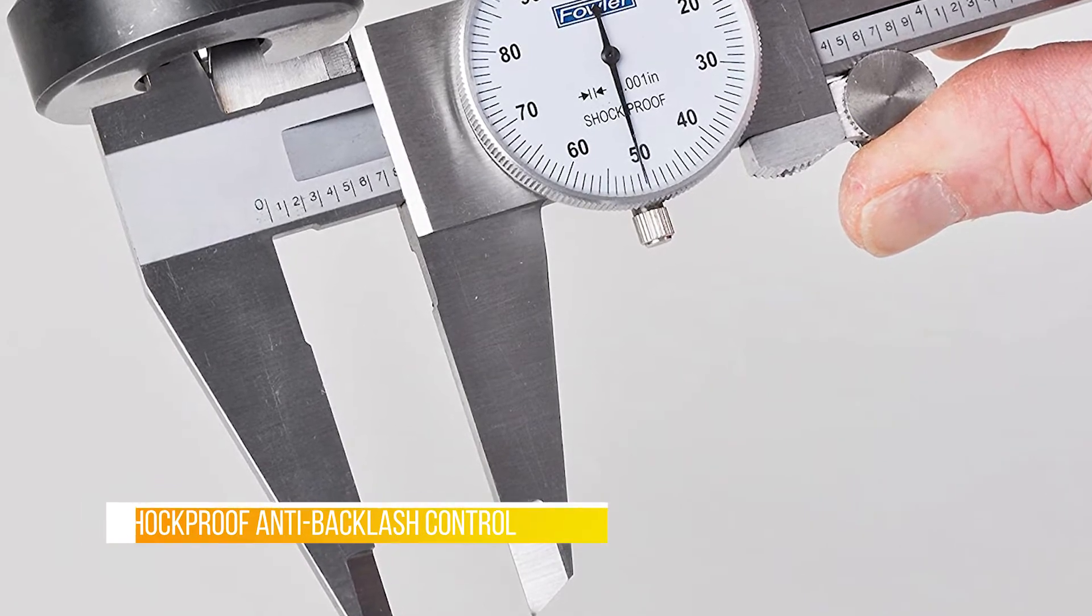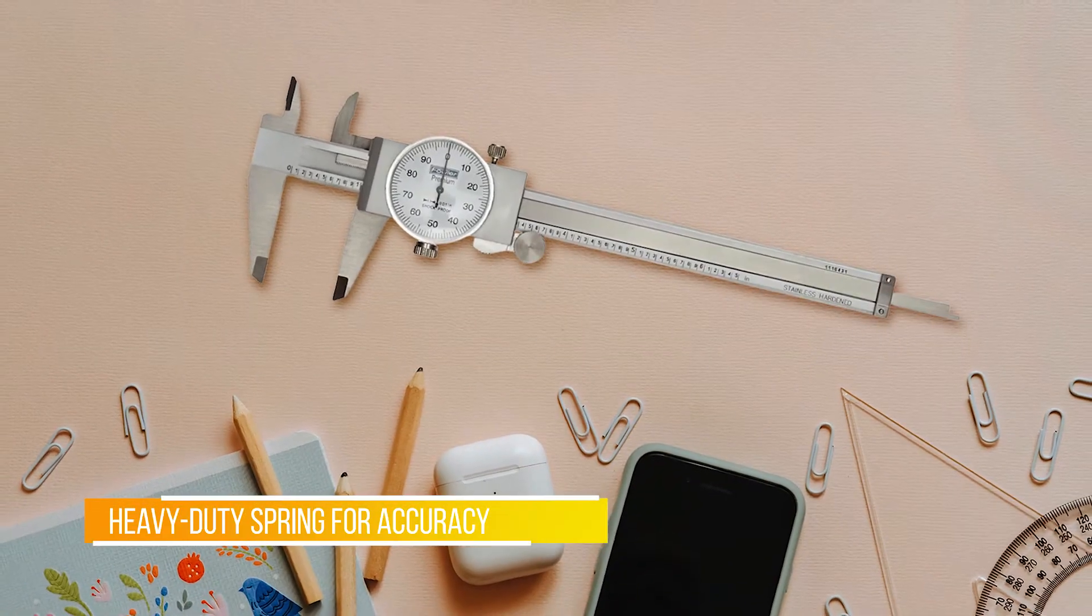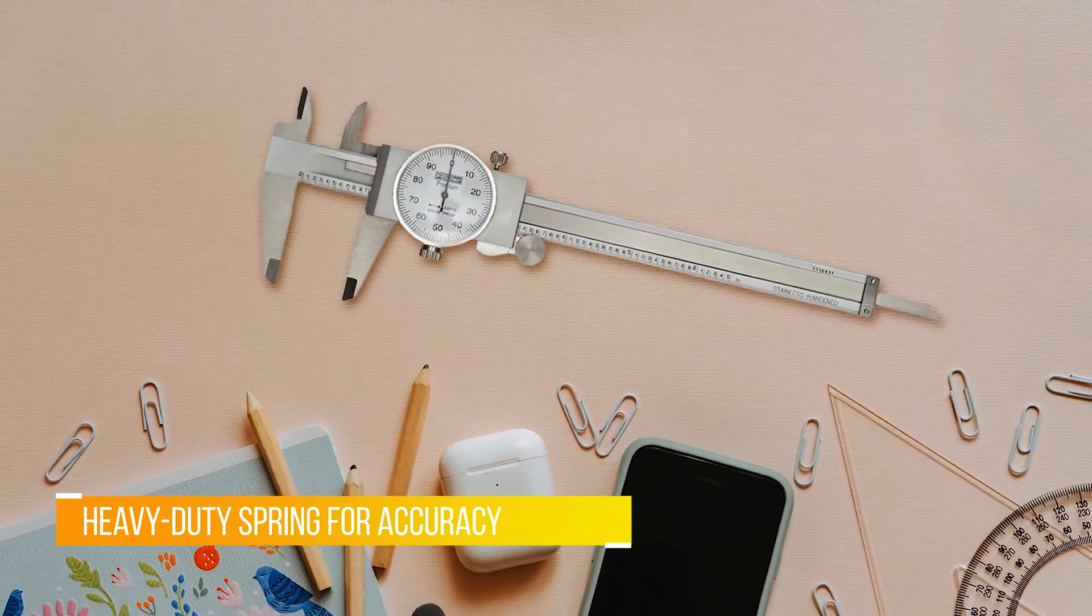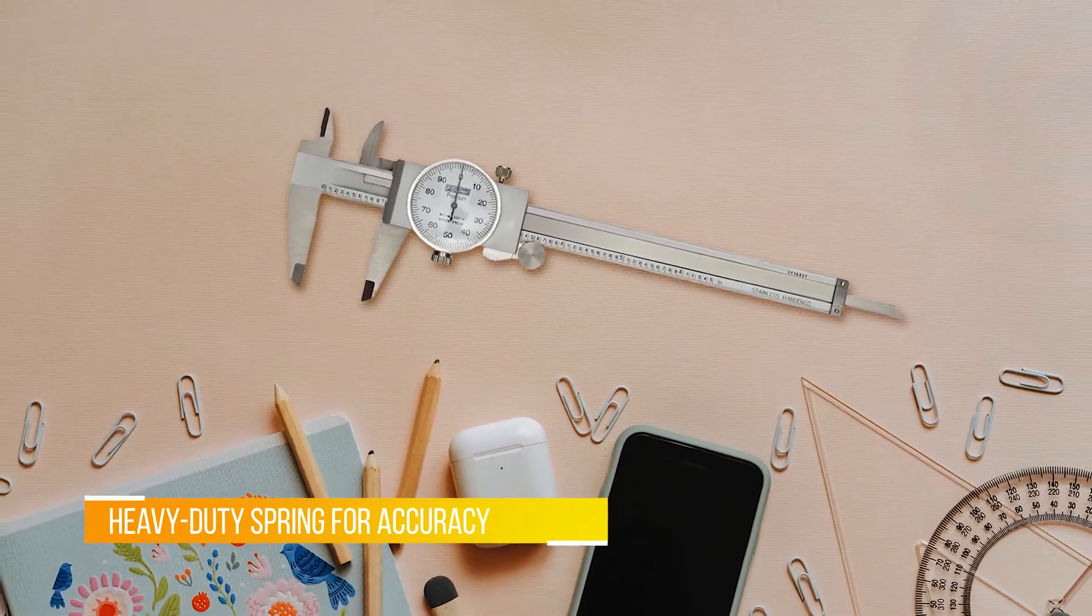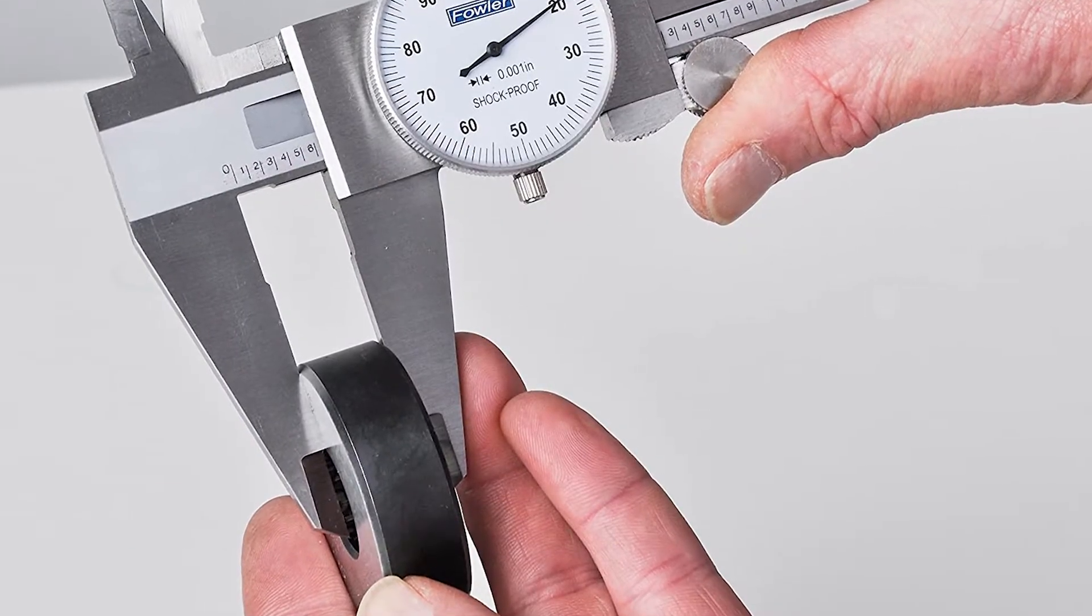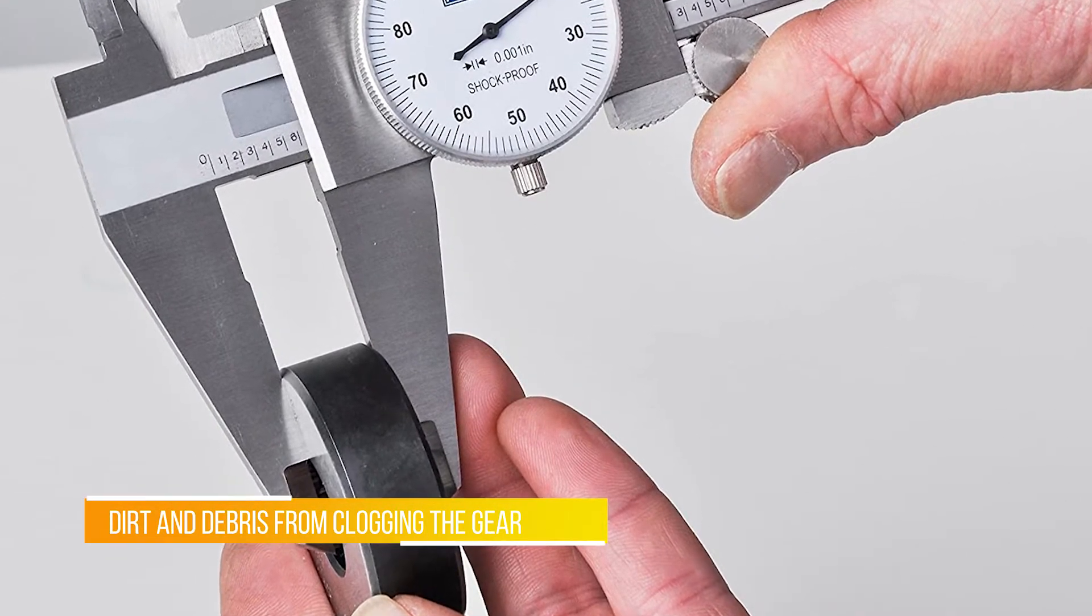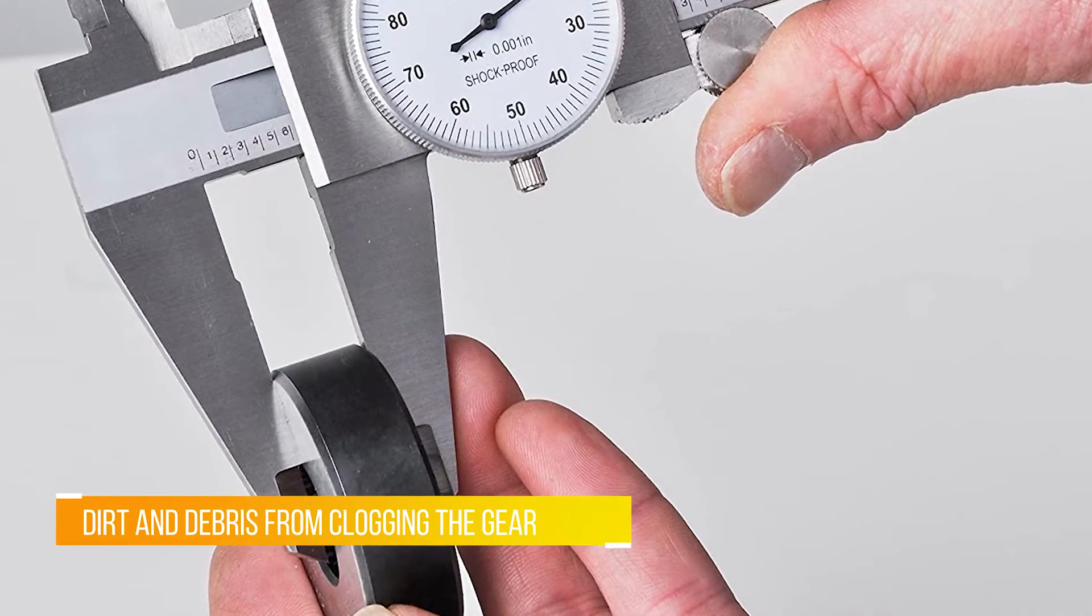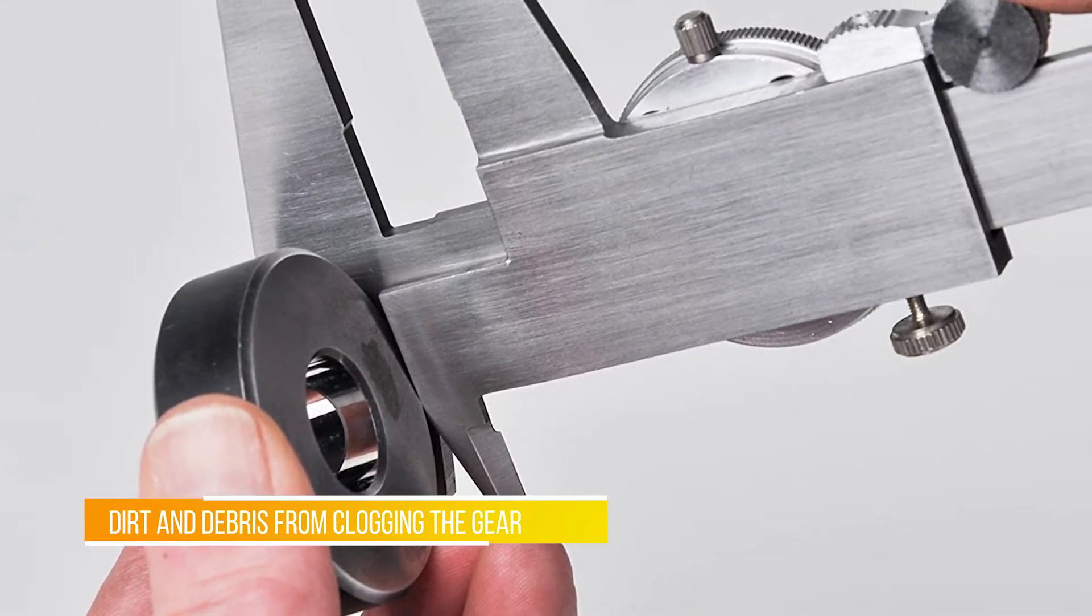The Fowler shockproof stainless steel dial caliper has dial graduations of 0.001 inches with 0.001 inch accuracy, shockproof anti-backlash control, a sliding jaw with a lock, and a covered rack. This caliper is used for measuring inside dimensions, outside dimensions, depth, and step.